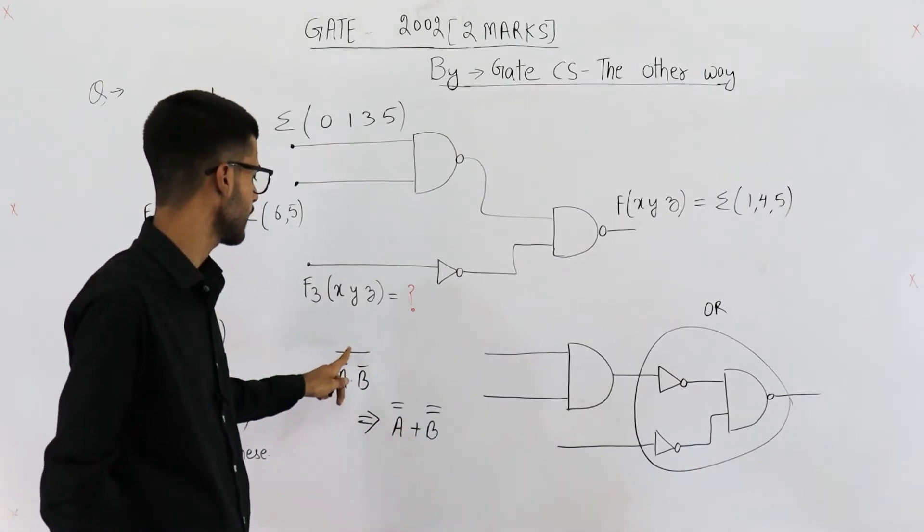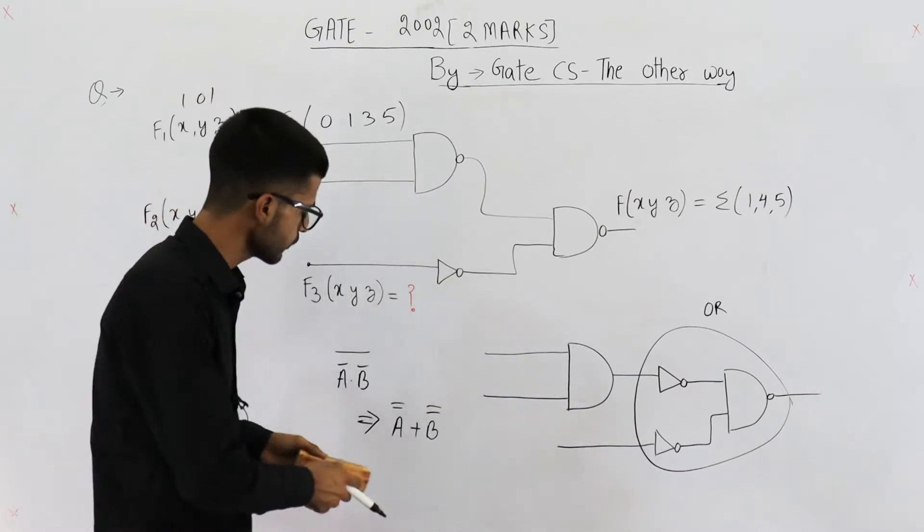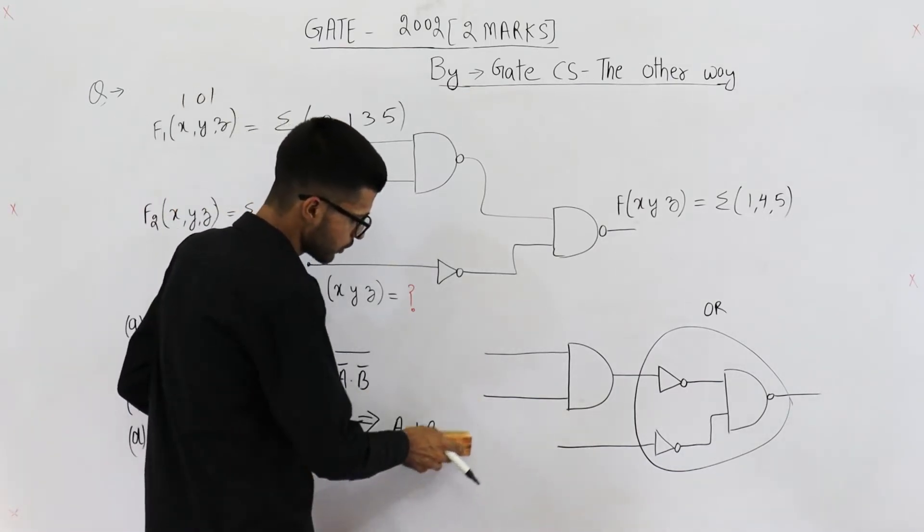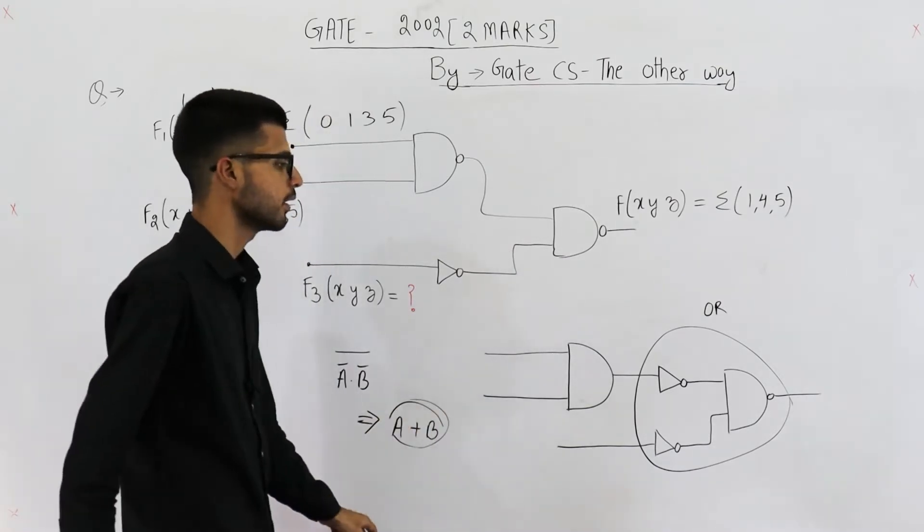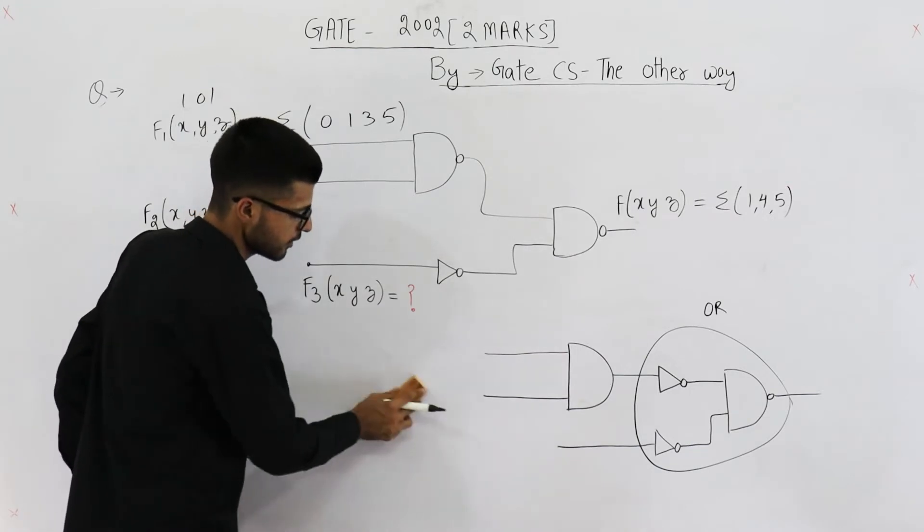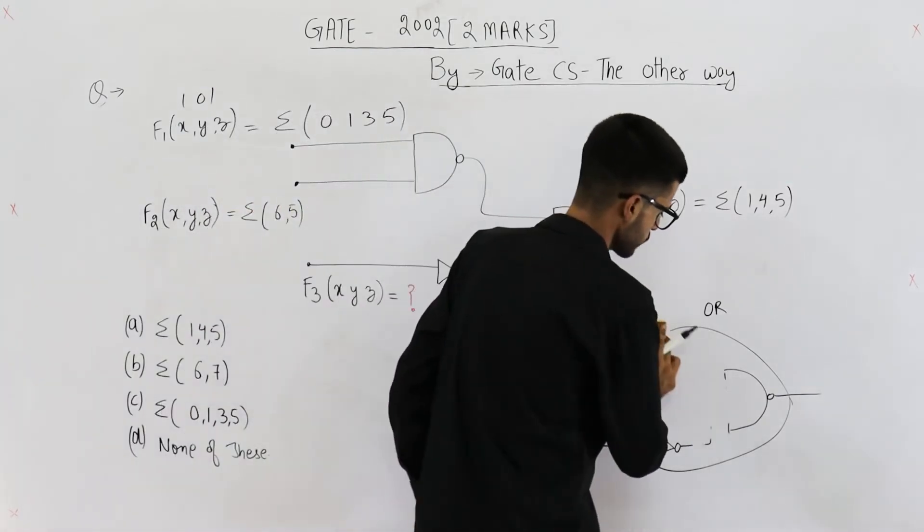How is this A plus B? Just apply De Morgan's law here. Dot will be changed to plus and this complement will be split on both the sides. Now you know double complement can be ignored easily, so we got OR of A and B. That's the reason I am saying to just replace that entire circuit with the OR gate. Let's do that.